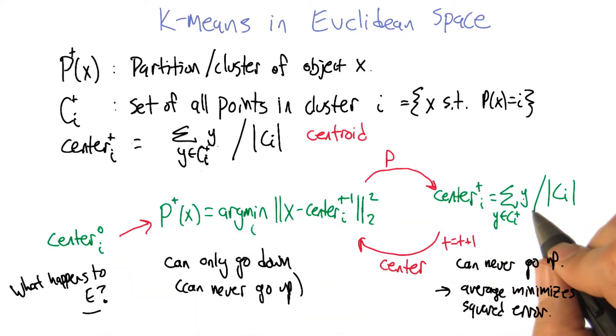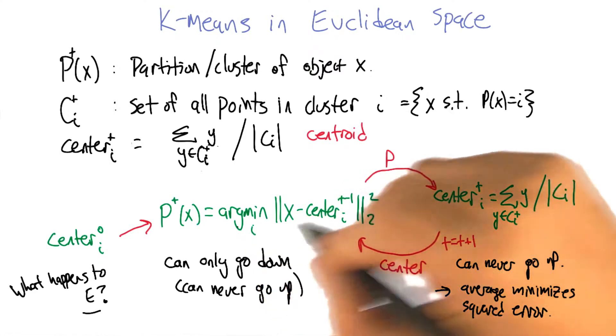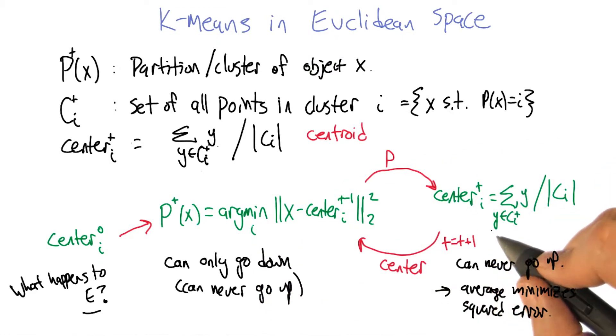So this is really kind of neat. When we move points around, we move it to reduce error. And we move centers around, we always move it to the center, even though this is a continuous space. We always jump to the center that actually has minimum error under the assumption that we're holding the partition steady. Right. So this is just great.